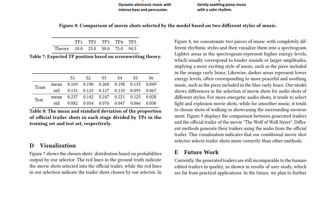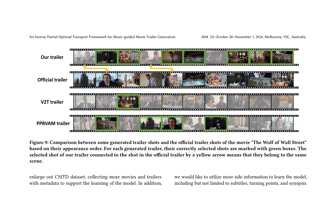Future work includes enhancing the quality of generated trailers to make them more comparable to human-edited trailers. The inverse partial optimal transport framework aims to produce trailers that closely resemble official movie trailers, based on optimal transport for comparing and matching scenes. The authors compare generated trailer shots with those from The Wolf of Wall Street, evaluating correctly selected shots marked with green boxes and connections to official trailer shots indicated by yellow arrows. Future work also includes expanding the CMTD dataset and utilizing additional scene information like subtitles, turning points, and synopsis to enhance the learning process. This novel approach highlights the potential of music guidance and optimal transport in creating trailers that closely resemble official ones.